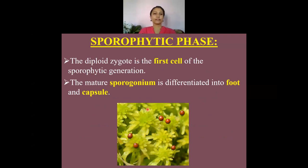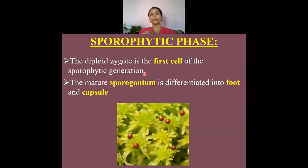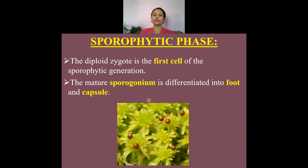The diploid zygote is the first cell of the sporophytic generation, which ultimately leads to the production of the mature sporogonium, also known as the sporophyte. The sporogonium has a foot and a capsule. At the lowermost region there is a foot, but a seta is absent.